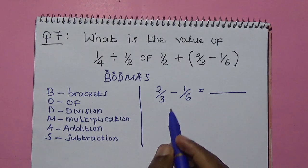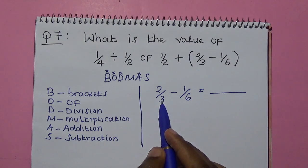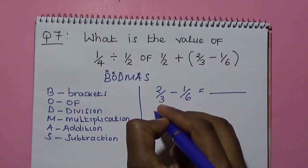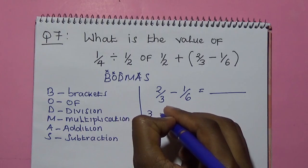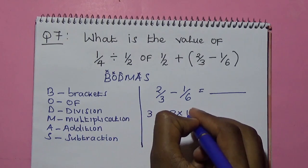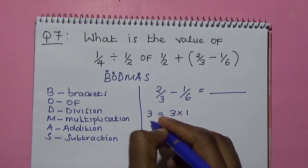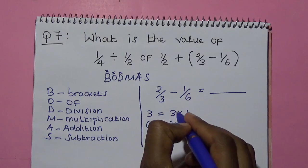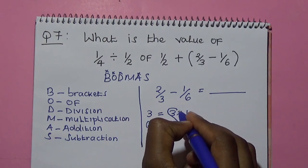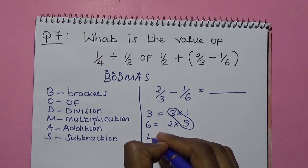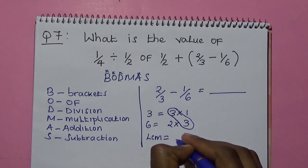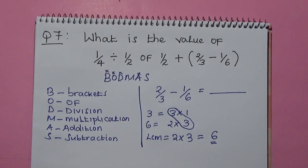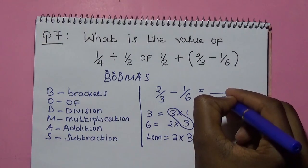This will be 2 over 3 minus 1 over 6. We find the LCM of 3 and 6. The LCM of 3 is 3 times 1. The LCM of 6 is 2 times 3. Therefore, the LCM of 3 and 6 is 6.